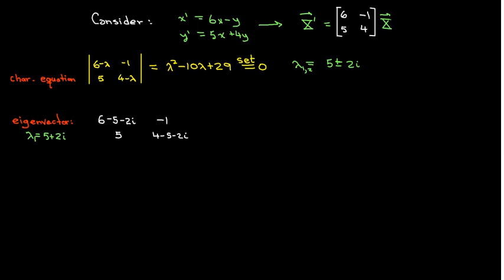So calculating the eigenvector, we're going to use the usual procedure. We're going to put 5 plus 2i in the place of lambda in A minus lambda I. Then we're going to use elementary row operations to simplify this. First, I want to collect the like terms.